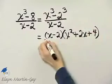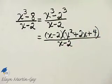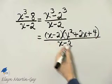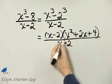I have factored the numerator, and then in the denominator, I have x minus 2. And now we look for any common factors. Notice we have a common factor in the numerator and the denominator of x minus 2.